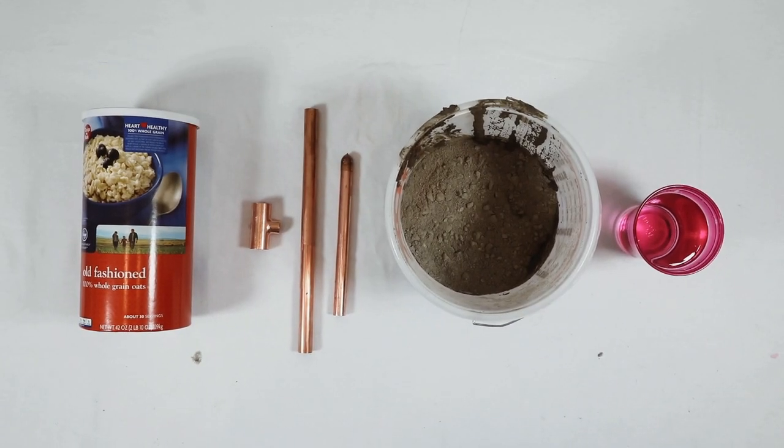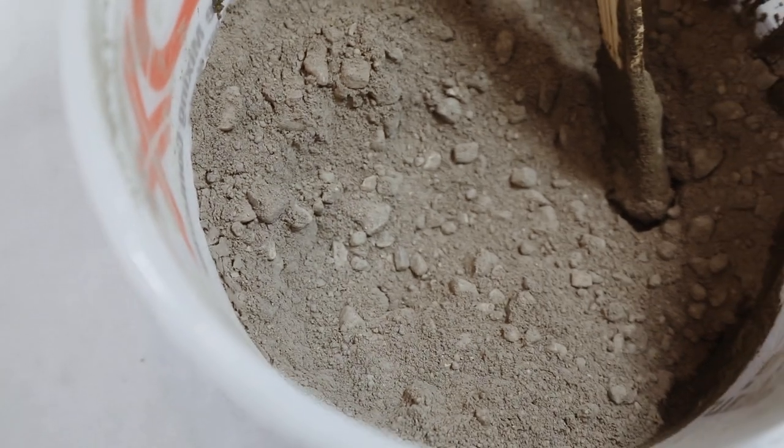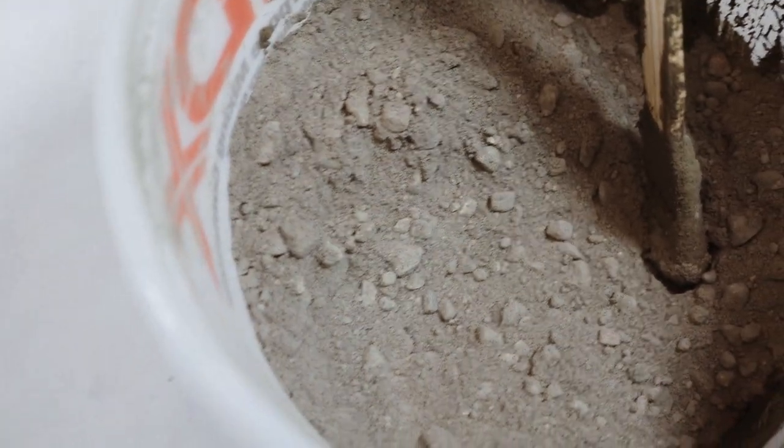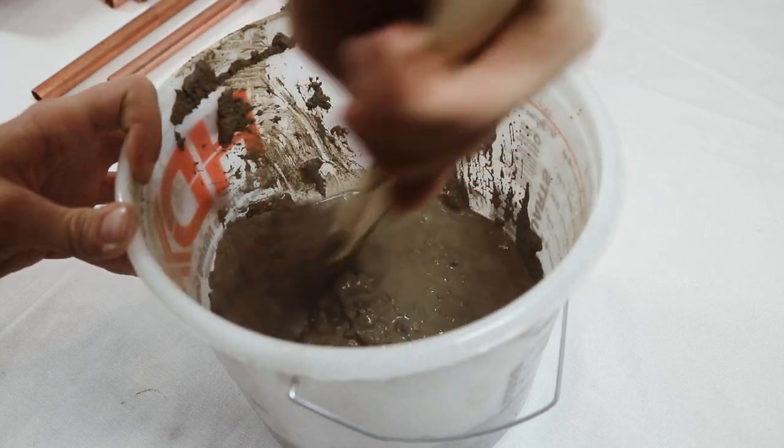For this first project all you're gonna need is some copper pipes, cement mix, water, and something to act as a mold. So I actually use this oatmeal container. And this is what the cement comes like. There are lots of rocks in it but because I'm using a large surface area of cement I don't mind that for this project.